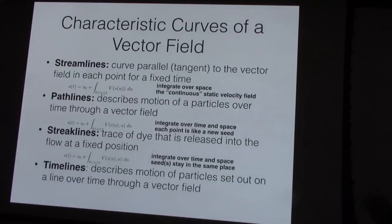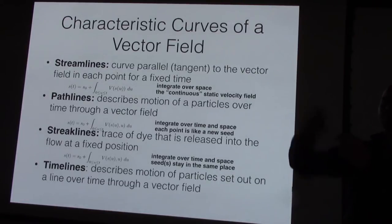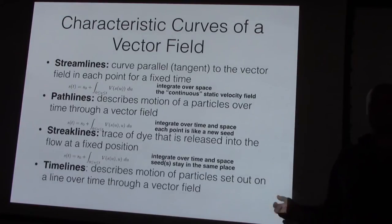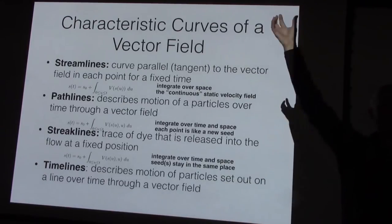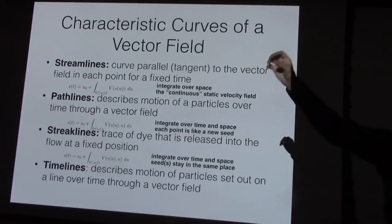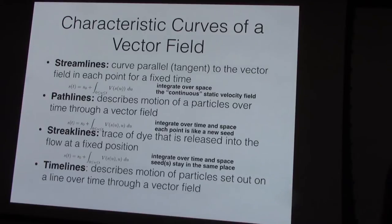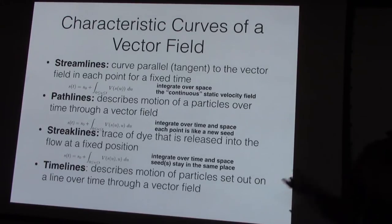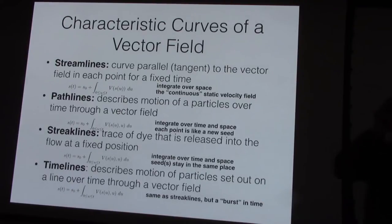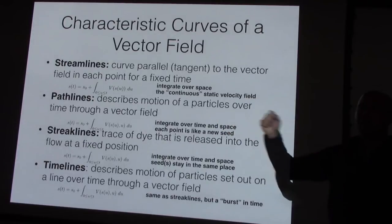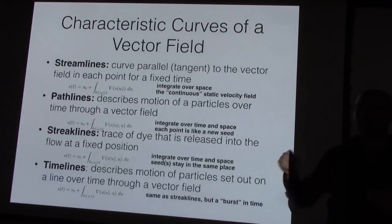Streaklines also integrate over time and space, but you only seed from a fixed position — very similar to the tower emitting dyed gas where dye comes from one specific point in space and you see how it evolves over time. Timelines describe the motion of particles set up over a line in time through the vector field — like a burst of particles at one point in time that flows through the field, then another burst, and so on.